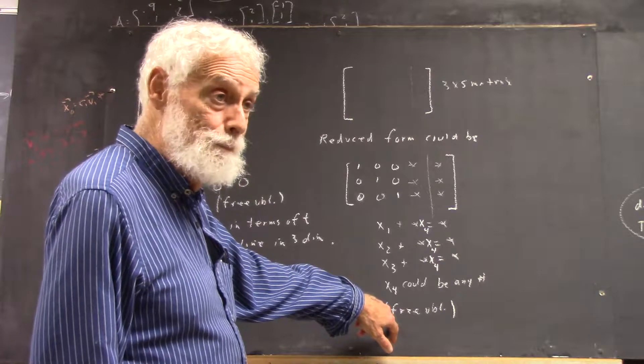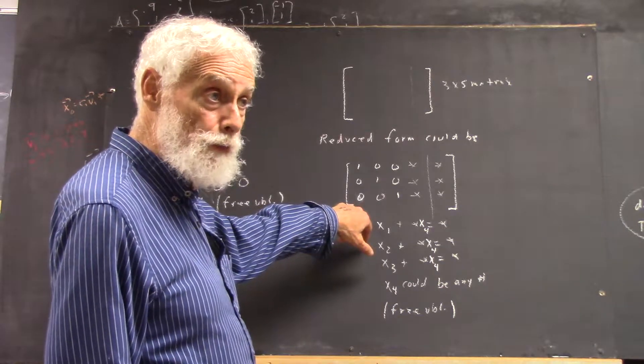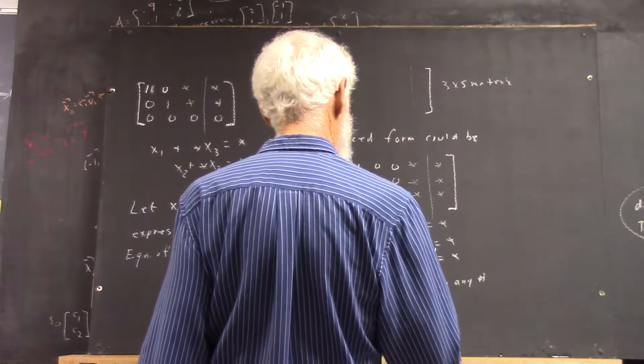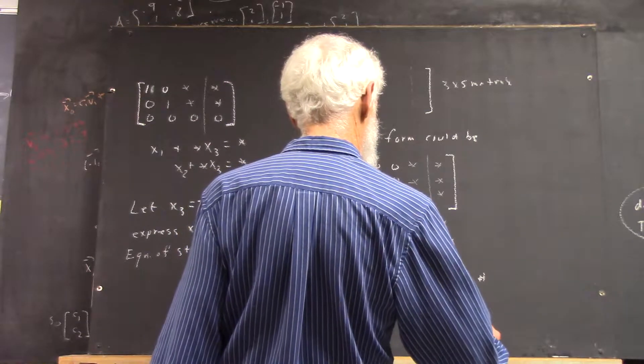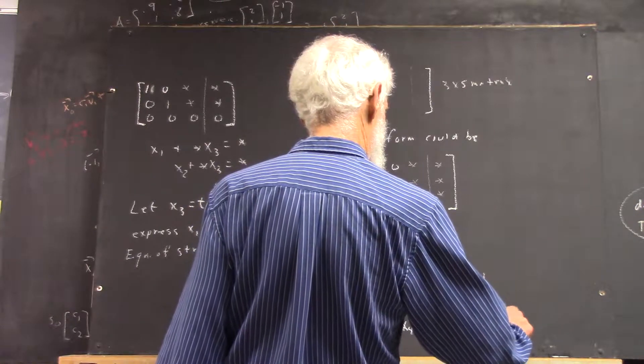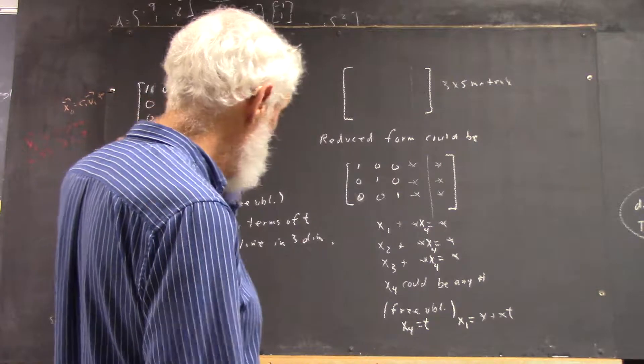So, you've got a free variable. x3, and then everything else is in terms of that free variable. So, now you have x1 is some number plus a multiple of t, etc., right?